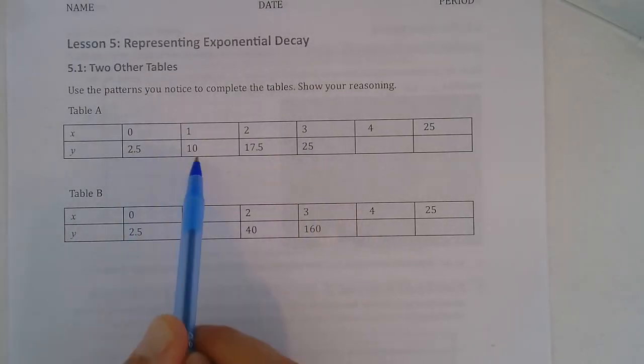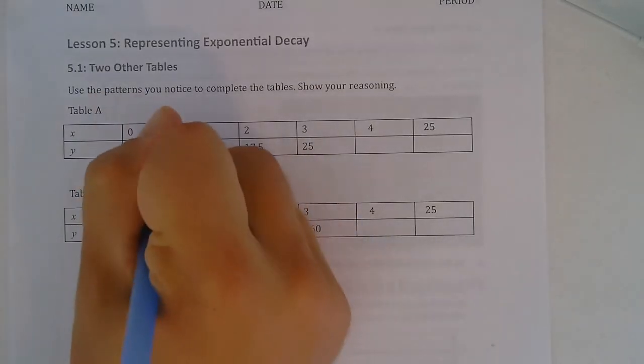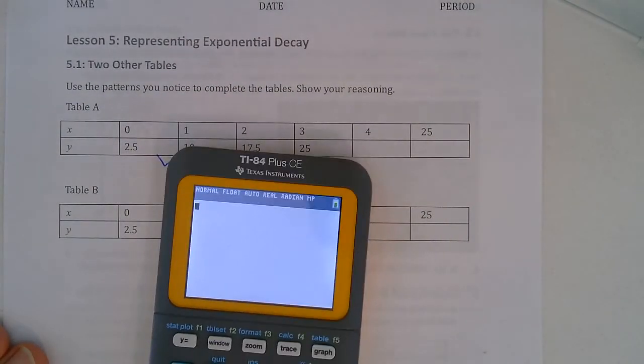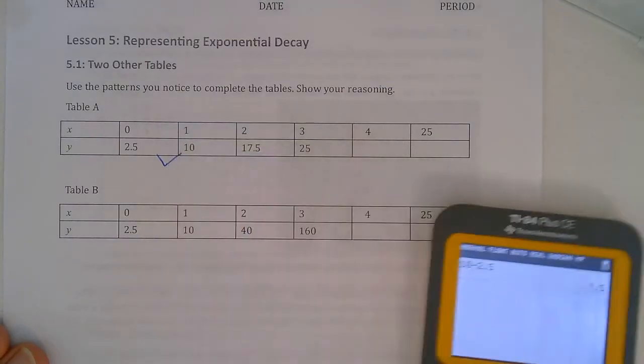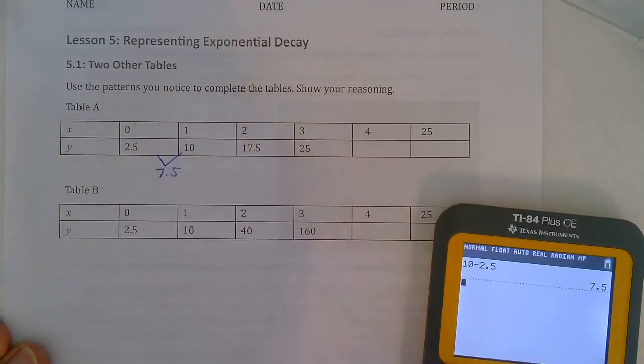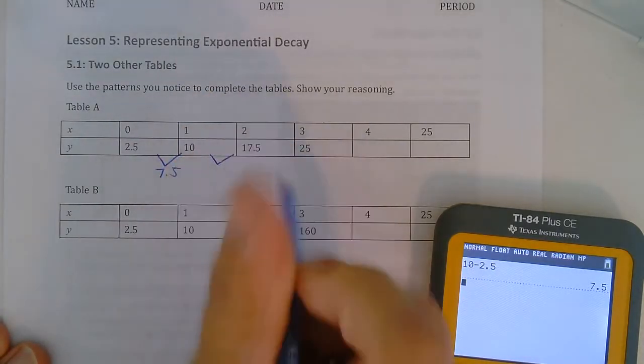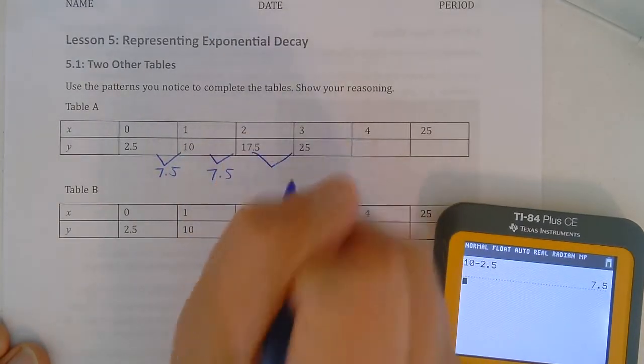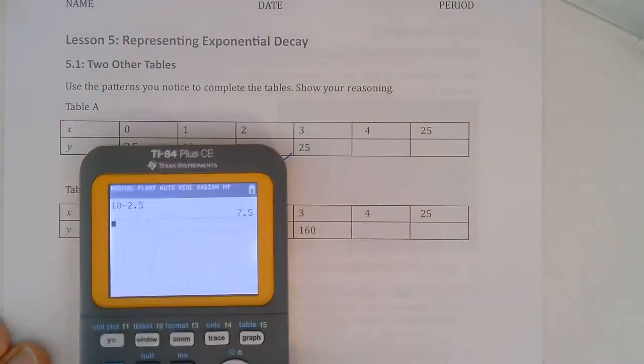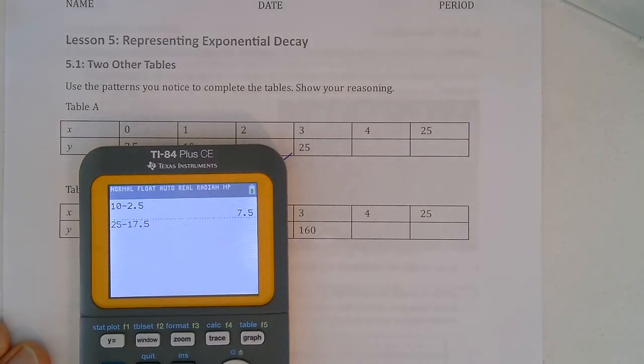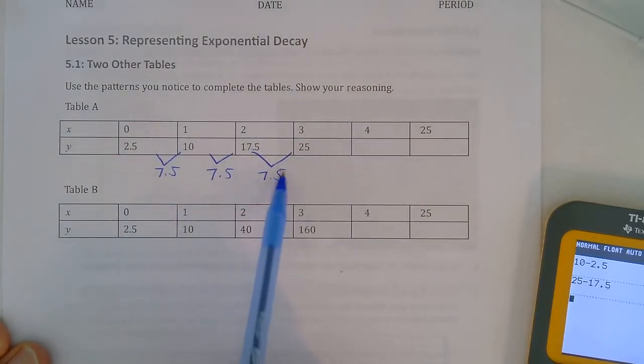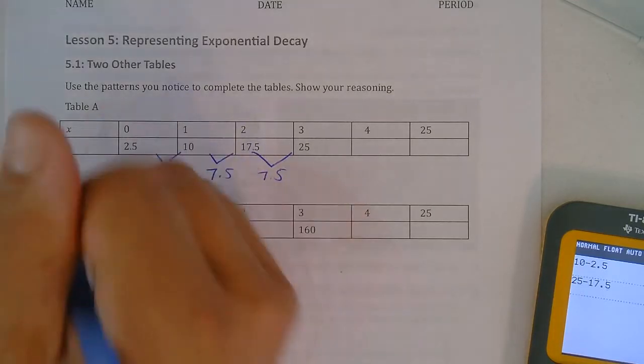And then I need to look at how is it increasing. So here to go from 2.5 to 10 we increase by, and you can just subtract, so 10 minus 2.5 gives us 7.5. And then the same thing here, 17.5 minus 10, that's again 7.5. And then 25 minus 17.5 is again 7.5. So when you're increasing by 7.5 every time for y, every time x increases by one, this is going to be a linear pattern.